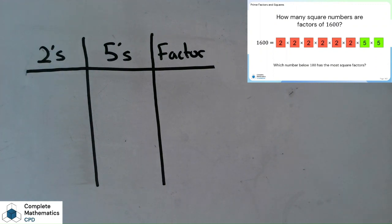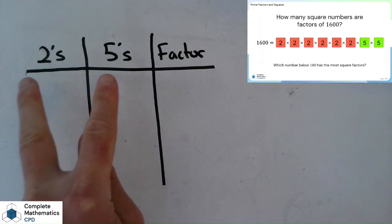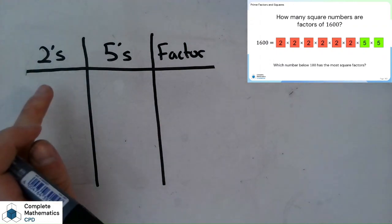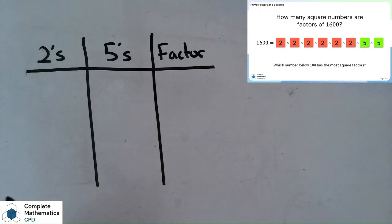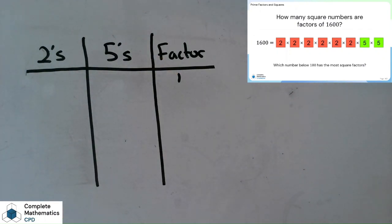Now we know the method to find a square factor, make those two equal piles. We can record our results systematically in a table and try to find all these square factors. The important thing to notice is that the number of 2s and the number of 5s must be an even number so we can split those factors into two even piles. The first one is 0 2s and 0 5s which gives the factor of 1, and every number has that factor.